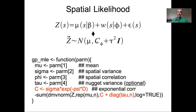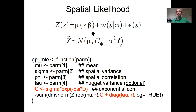We're literally adding the spatial covariance matrix C plus the residual error tau, assuming that tau follows the same assumptions as before: it's just the same value tau along the diagonal of a covariance matrix with zero covariance everywhere else. The identity matrix has ones on the diagonal and zeros everywhere else.